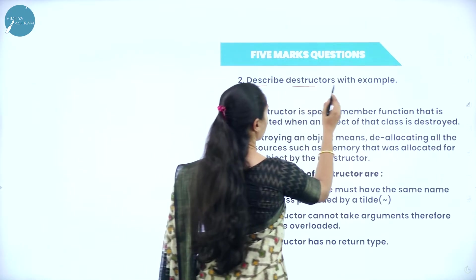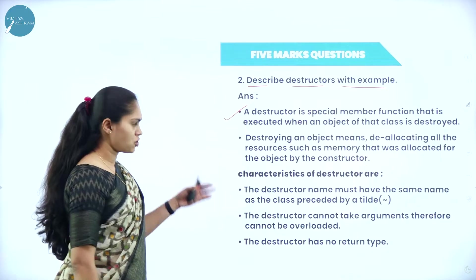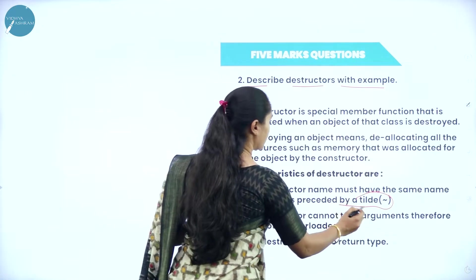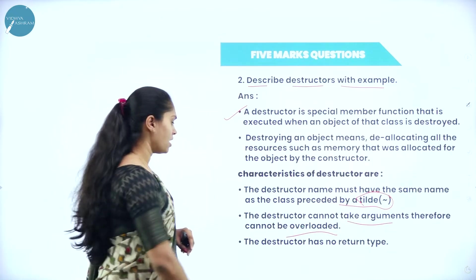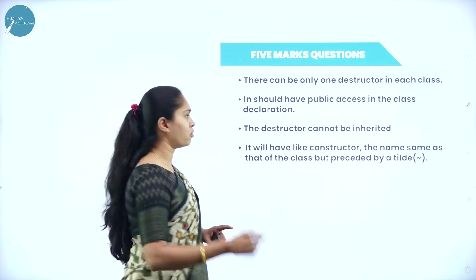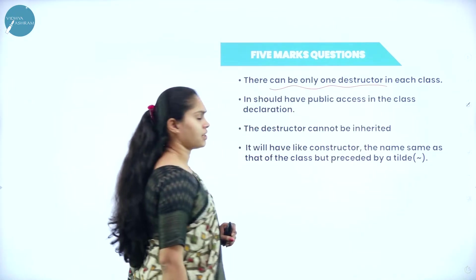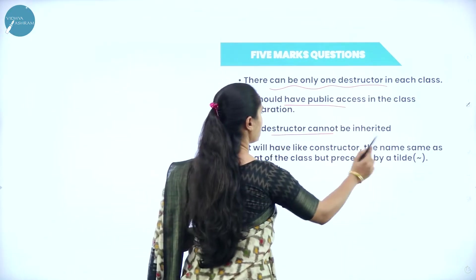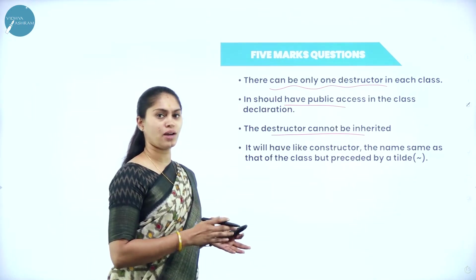Next, describe destructor with example. You have to write the definition of a destructor and also some characteristics. The destructor is preceded with the tilde symbol and it does not accept any argument. If it is not accepting arguments, overloading cannot happen. Destructor also has no return type and must be in the public section. It can have only one destructor in each class. It should come under the public section and we cannot inherit the destructor.